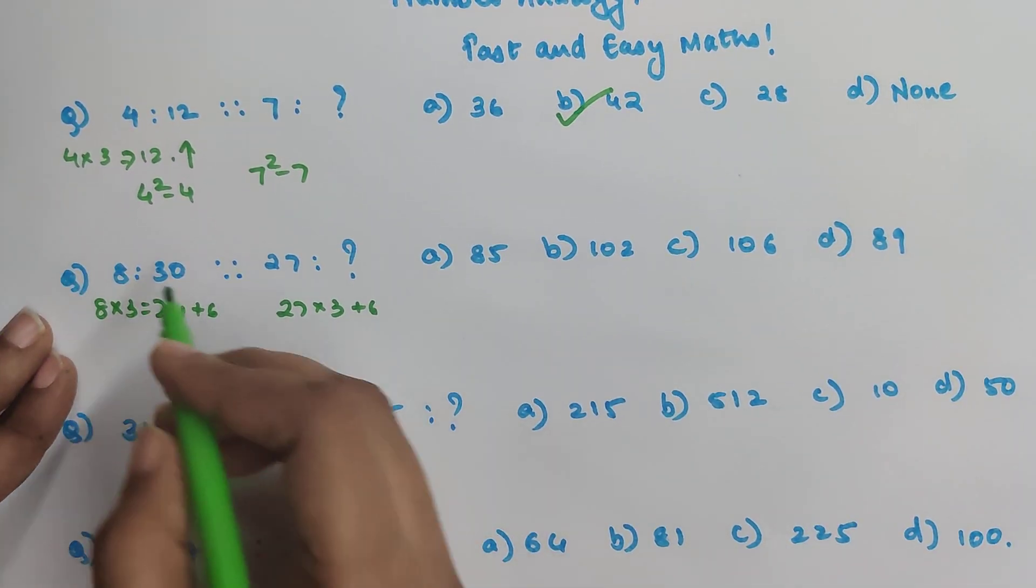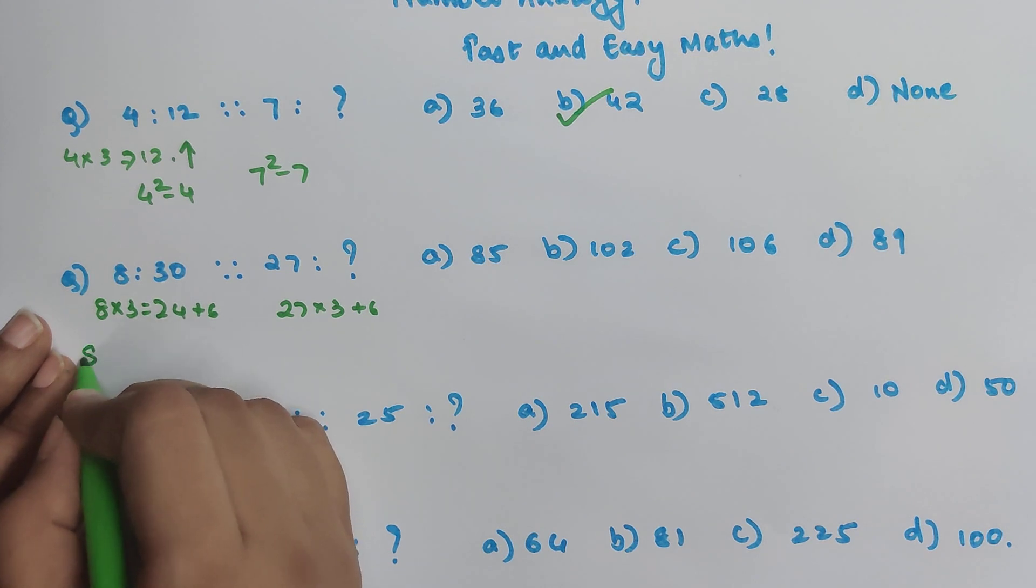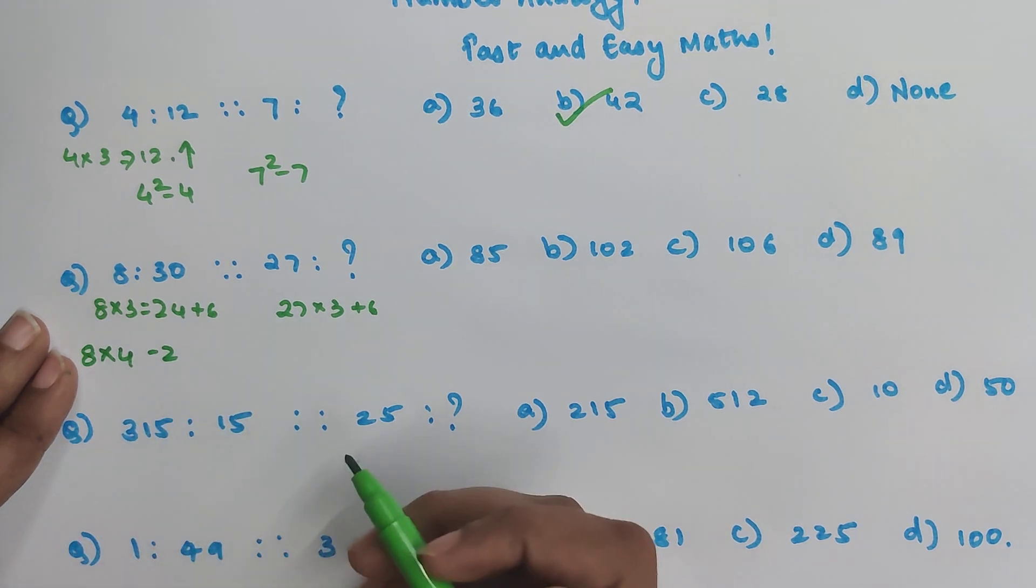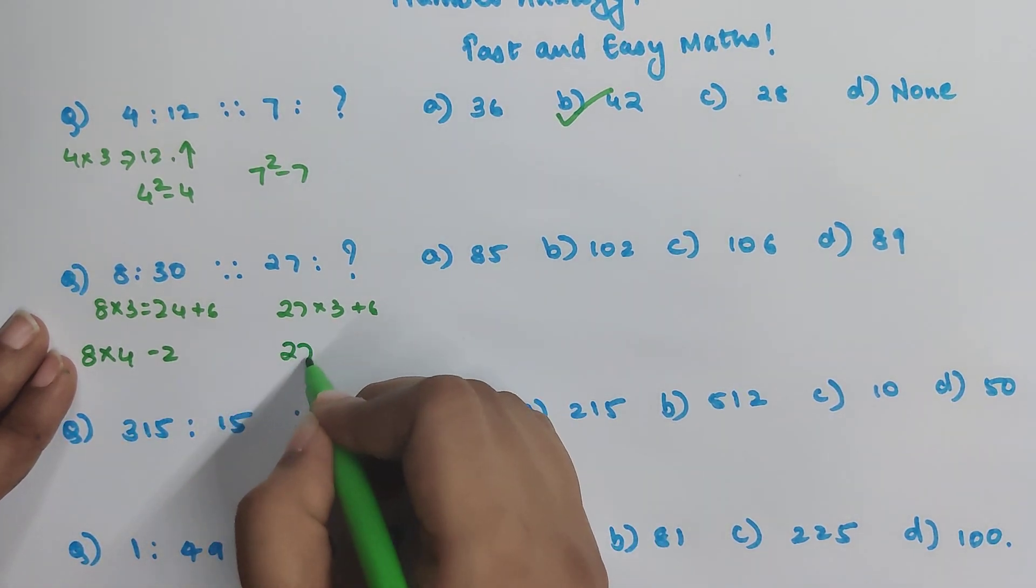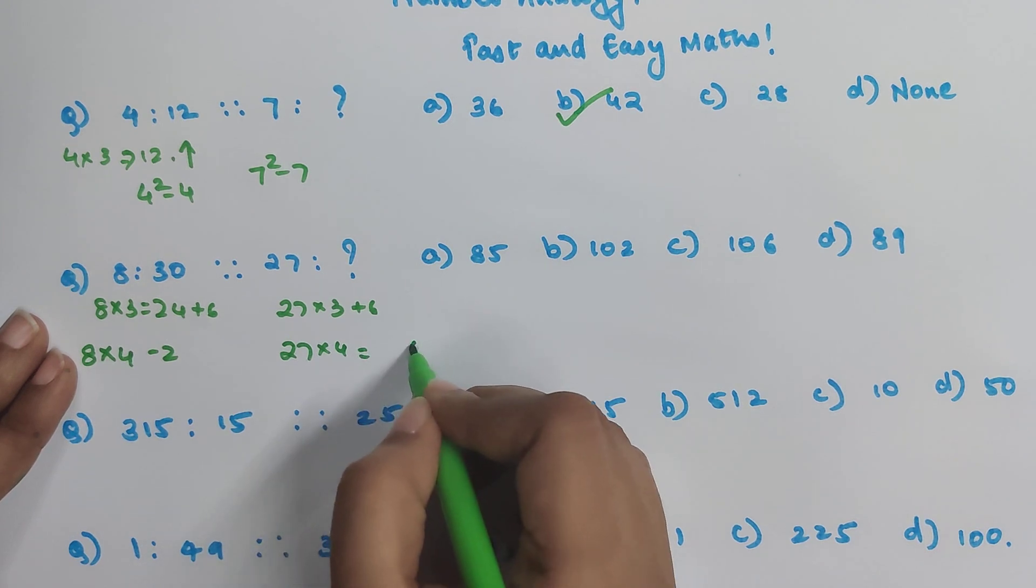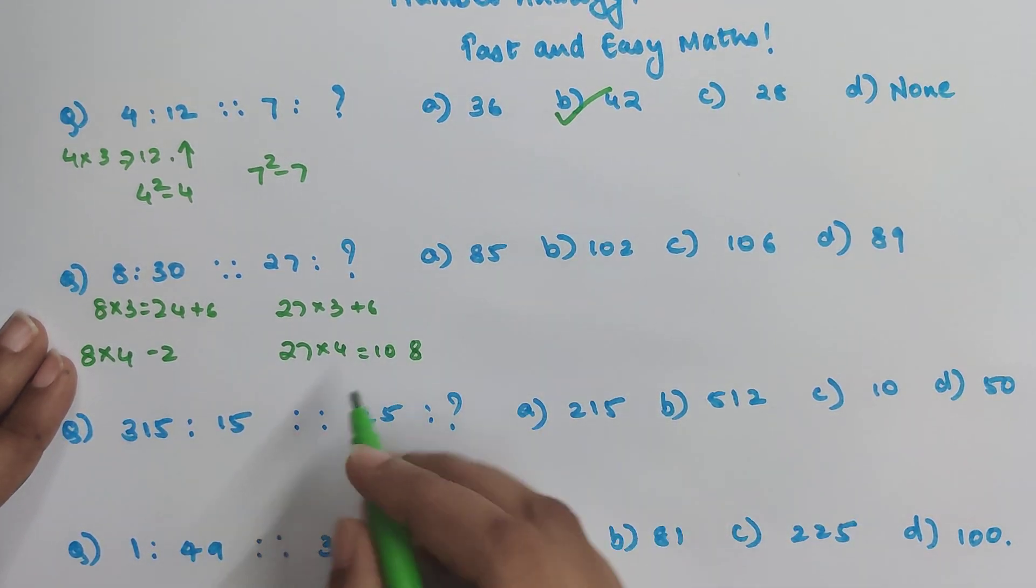So that should be 51 plus 6 will get you 57 but unfortunately that is not one of my options. So now, can I do this: 8 into 4 minus 2, right? 8 into 4 is 32 minus 2 gets me 30. So 27 into 4, that is what, getting you 8, 1, 0, 8, yes.